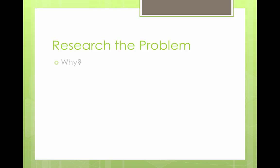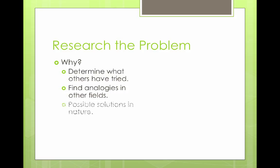So how do we research the problem? Well, first let's understand why we want to do research about a problem. We need to understand what other people have tried to solve our particular problem. We need to look for other things in other fields that might be applicable to our problem, things that are analogous. And we need to look to nature. Often nature has a good solution for the problem that we are working on.